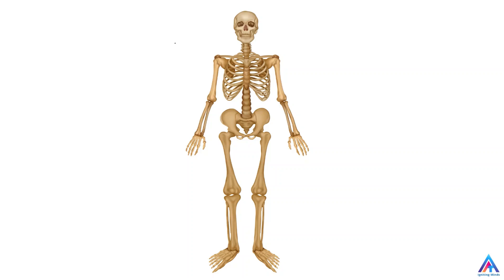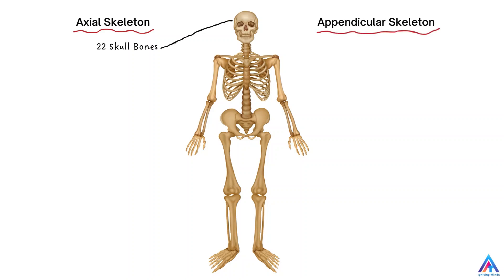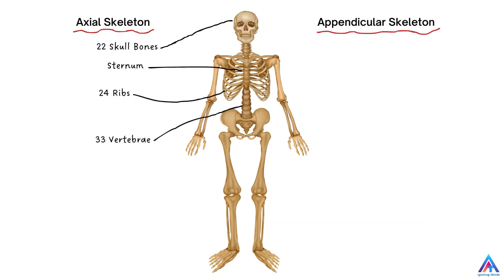There are 22 bones in the skull. Then there is the sternum which has three parts, which I will not be describing now. Then there are 24 ribs — I will talk about the various types of ribs in following lectures. There are 33 vertebrae. So if you add up all this, there are a total of 80 bones in the axial skeletal system.